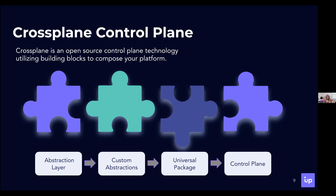The third big building block is you can take all of this and package it all together. I like to think of this as Crossplane enabling the app store for the cloud — you can go to the marketplace, grab a package, install it on a Crossplane control plane, and it will unbundle all those components, start running and configuring them, and bring whatever you've defined to life. The last building block is the control plane itself — that is the engine that enables all of the other things.